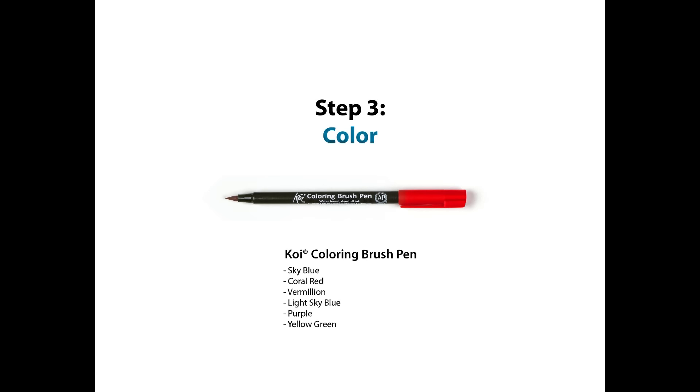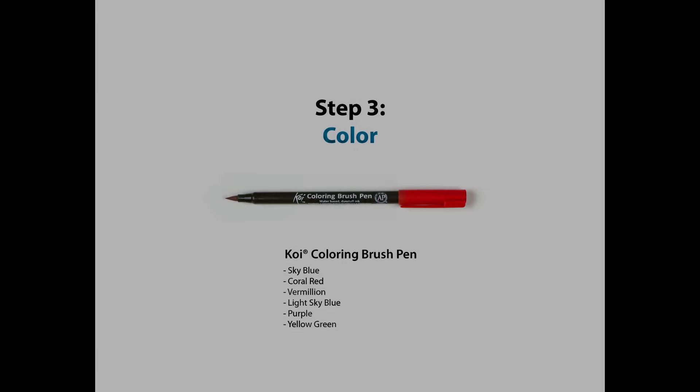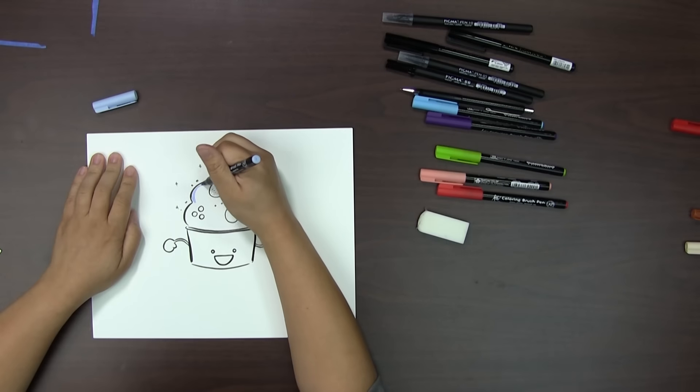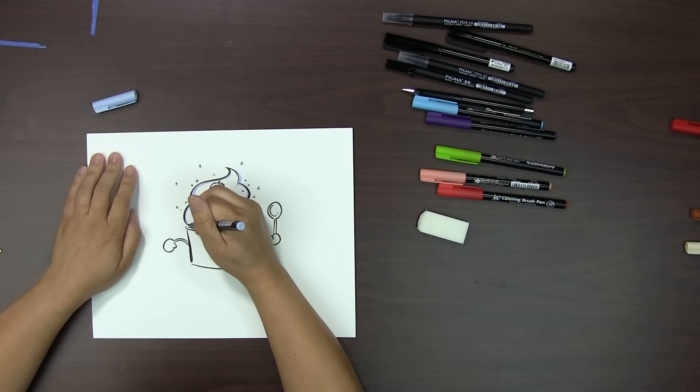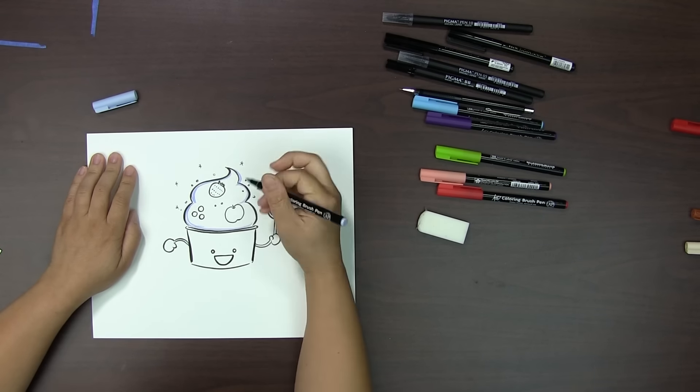Step three is color. For this step, I'll be using the Koi coloring brush pens in a variety of different colors. I mentioned in the inking section that I wanted to keep a sketchy look to the froyo drawing. I'm going to continue with that style as I color.